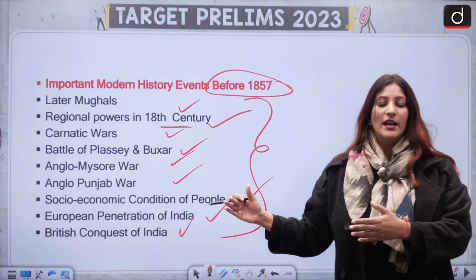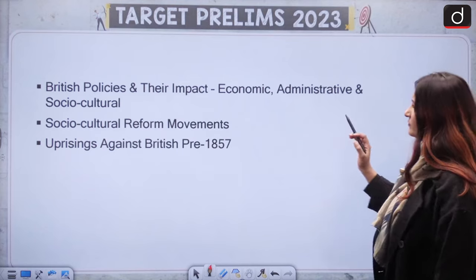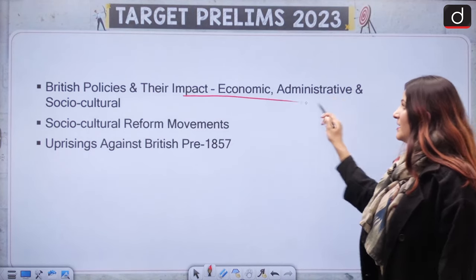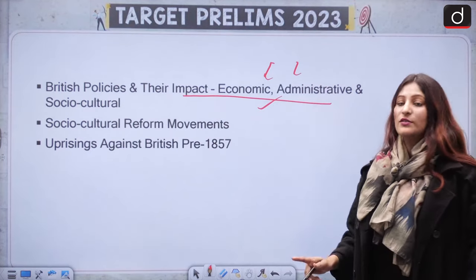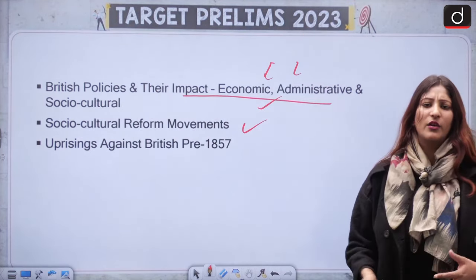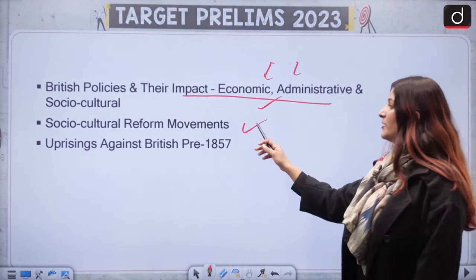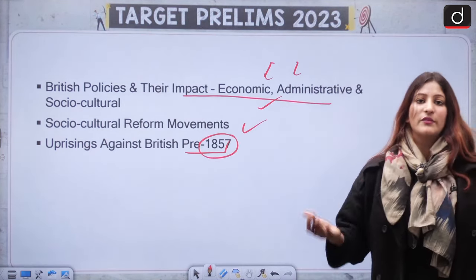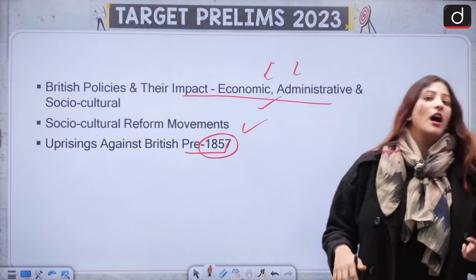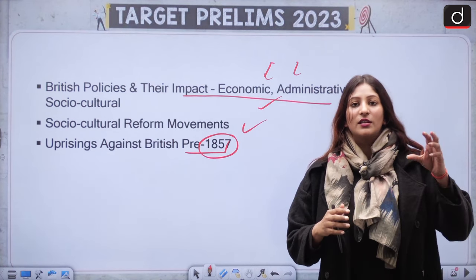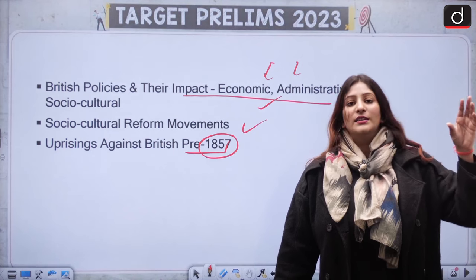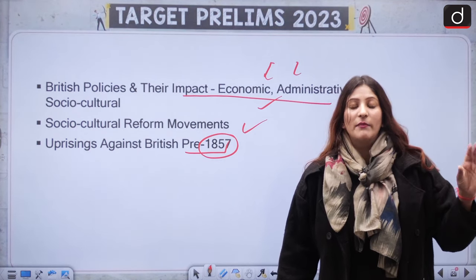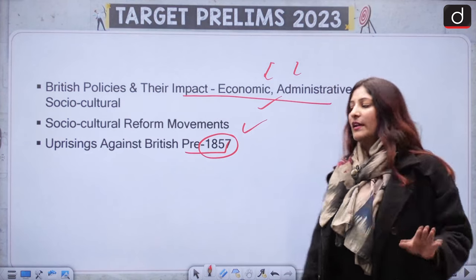This is what leads towards British imposition in India. Once they acquired the territory, they formulated policies — the policies and their impact on economic, administrative, and socio-cultural spheres. Also, what were the reform movements — Raja Ram Mohan Roy, Dayanand Saraswati, Vivekananda, everyone will come here. Rising against the British pre-1857: localized revolts — when they were conducted, their reasons, important leaders, and outcomes.